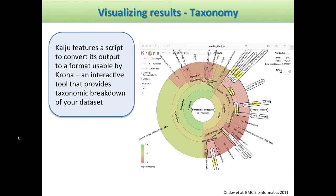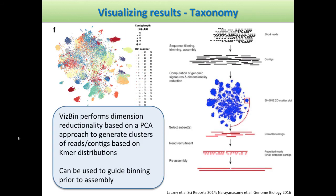There's a nice tool called Krona. Kaiju, as I mentioned, features a nice script that converts its output into a format usable by Krona. This is a tool you'll be using during the tutorial — you can click and select these different groups and it kind of expands. I'm not sure you'd actually present anything like this in your paper, but this is kind of the payoff: you spent all of this time generating these datasets and now you want to look at it.